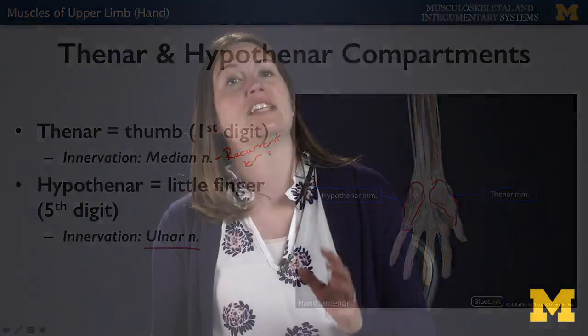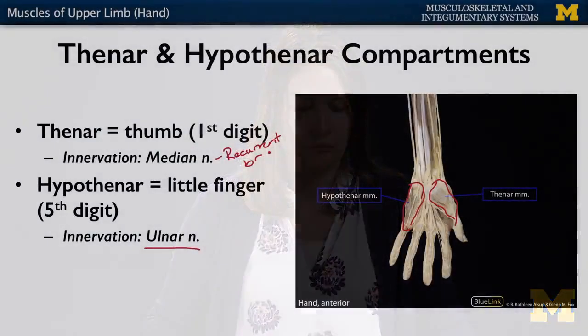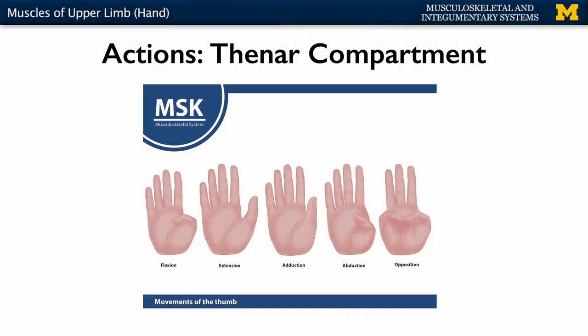So if you have damage to just the median nerve, it's not going to affect most of the muscles of the hand — just those associated with your first digit. One thing to note is that we use the same terms for the actions of the thenar compartment — flexion, extension, abduction, and adduction — but the planes by which these movements occur are different than what we typically think.